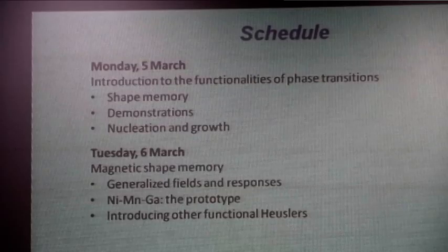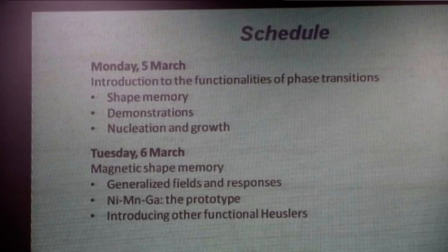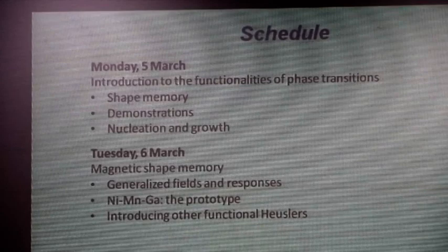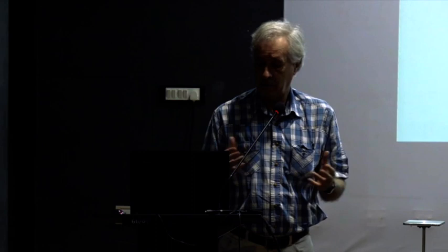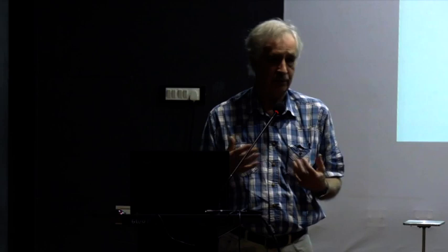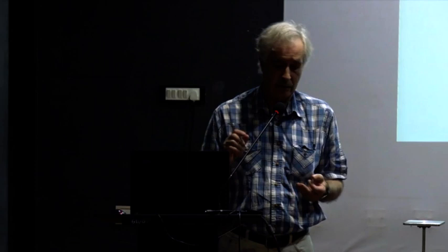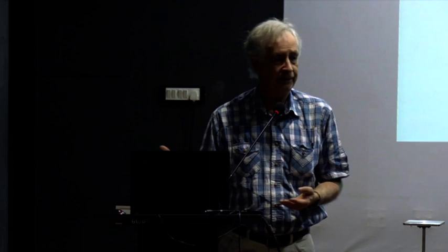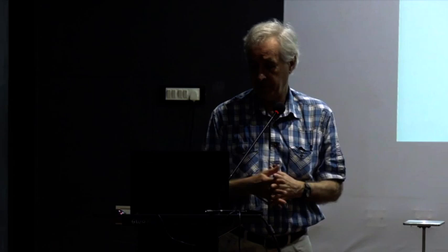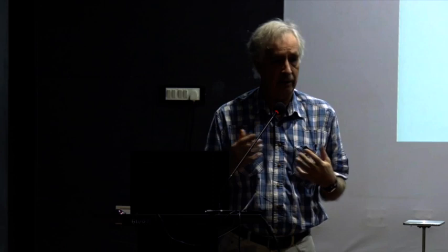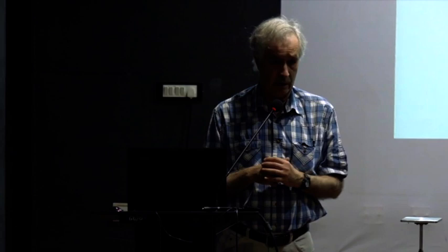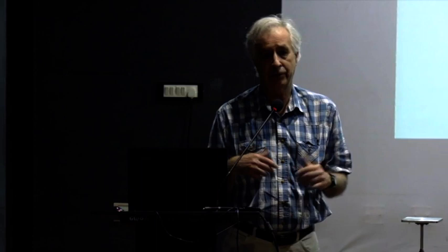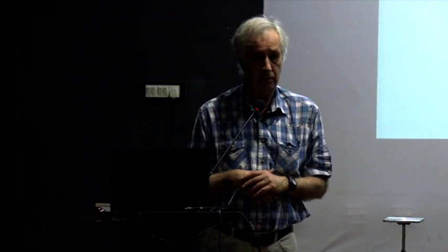Tomorrow I will be talking about magnetic shape memory — the magnetic version of the shape memory effect. To talk about that, I want to go into a little bit of formalism of generalized fields and responses. With a generalized field, we mean a magnetic field, a stress field, an electric field — all sorts of fields which are applied, and then you have responses. The prototype of magnetic shape memory is nickel manganese gallium.